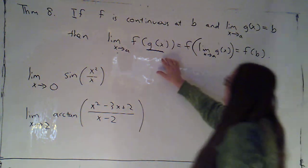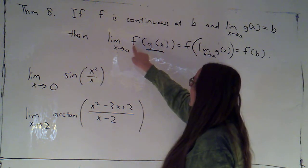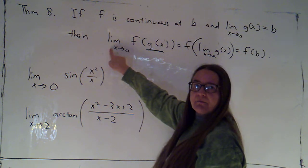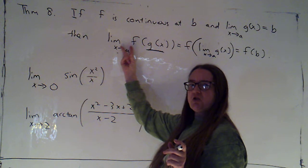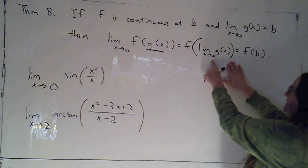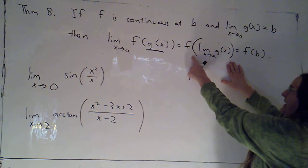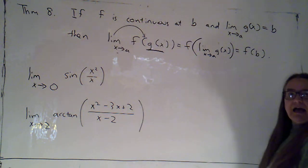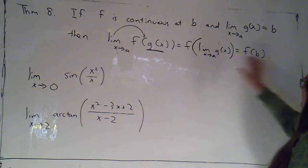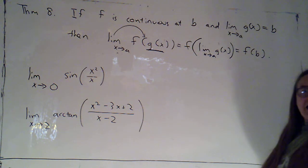And so here we're taking g(x), we're plugging into f, and then we're taking the limit. And this theorem says you can interchange the order of those last two steps. You can take the limit of g(x), and then plug that into f. So you're essentially pulling that limit inside. And of course, if that limit is b, then this just becomes f(b).